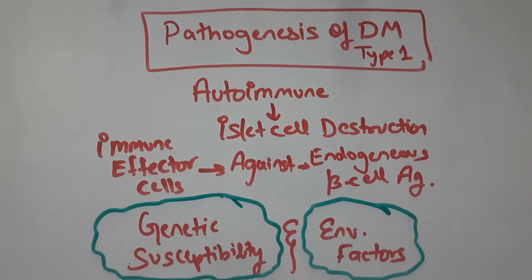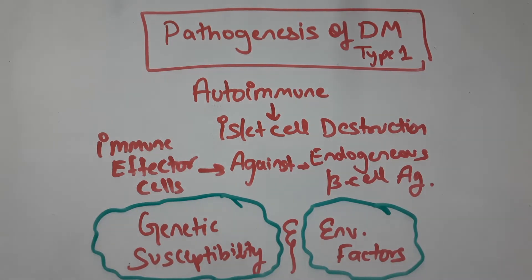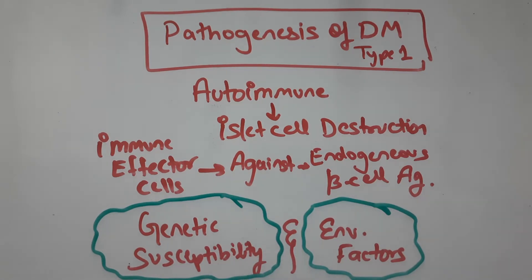Continuing with our lecture on diabetes mellitus from a pathology point of view, today we will discuss the pathogenesis of Type 1 diabetes mellitus. There are two main types: Type 1 diabetes, where there is beta cell destruction — beta cells are the cells in the islets of Langerhans which produce insulin — so obviously insulin decreases. In Type 2 diabetes, the two main features are insulin resistance and beta cell dysfunction.